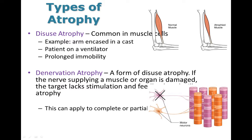The second type of atrophy is denervation atrophy. This is a form of disuse atrophy, but in the case of denervation atrophy a nerve that supplies a muscle group or organ is damaged. Most commonly denervation atrophy involves skeletal muscle, and patients with spinal cord injury generally experience significant muscle atrophy within the first few months after their injury due to denervation atrophy.